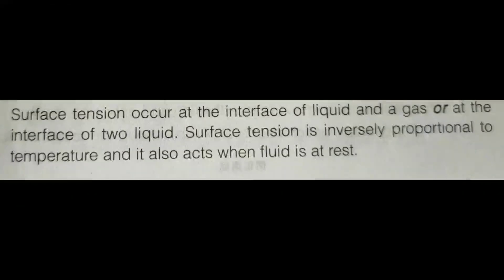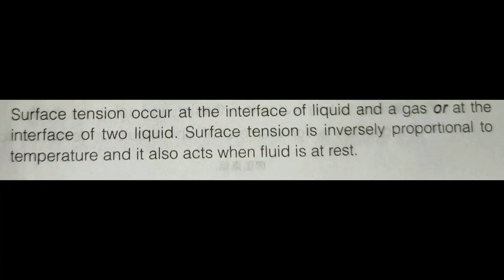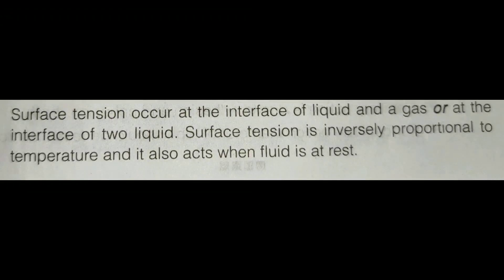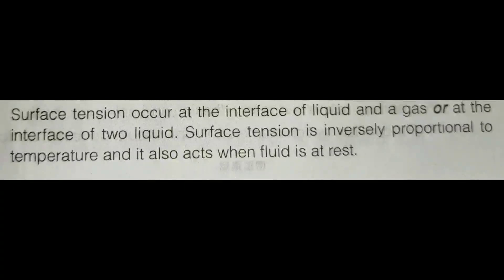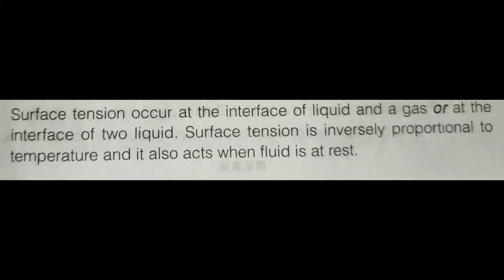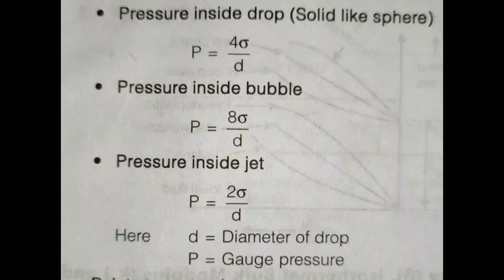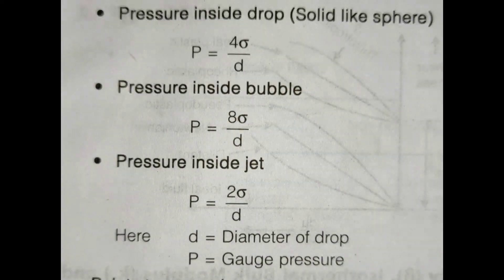Surface tension occurs at the interface of a liquid and a gas, or at the interface of two fluids. Surface tension is inversely proportional to temperature and acts when the fluid is at rest. Pressure inside a drop, if the drop is spherical, is p equals 4 sigma divided by d. Pressure inside a bubble is p equals 8 sigma divided by d. Pressure inside a liquid jet is p equals 2 sigma divided by d.